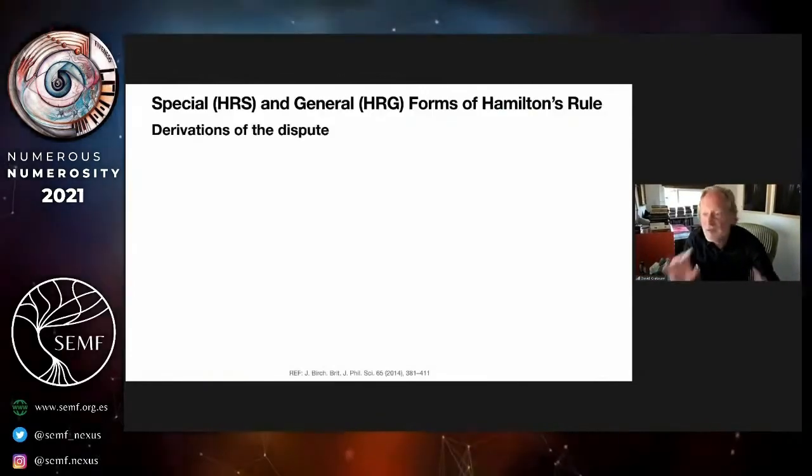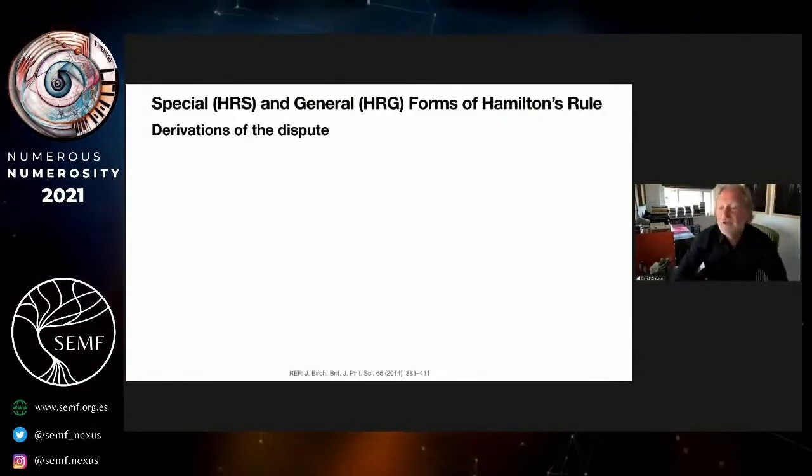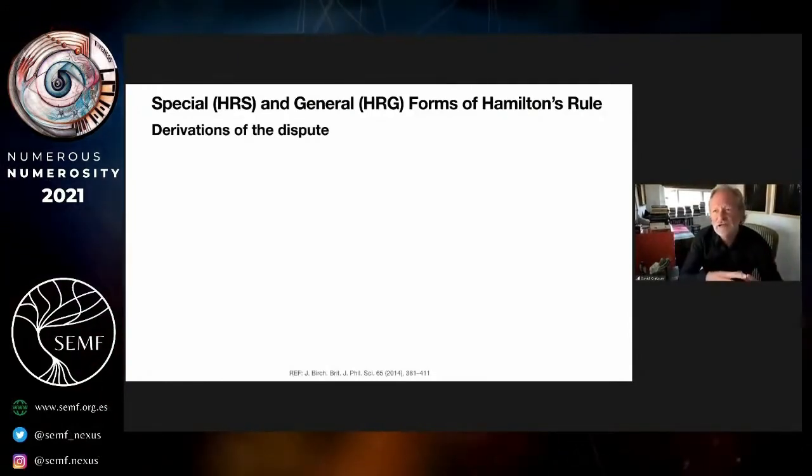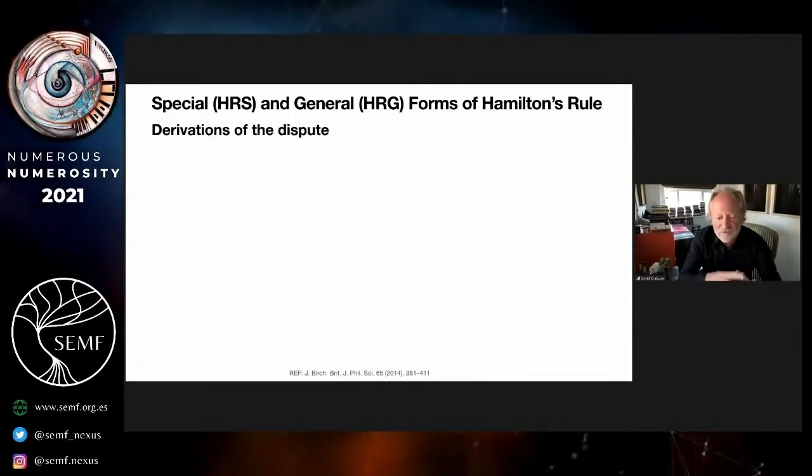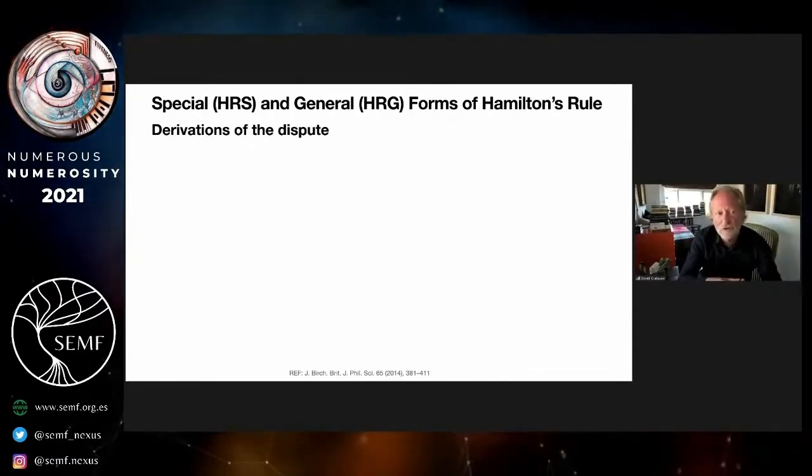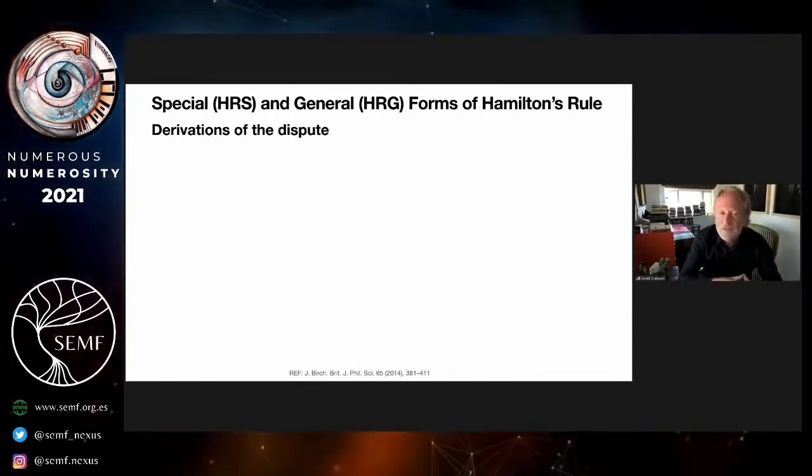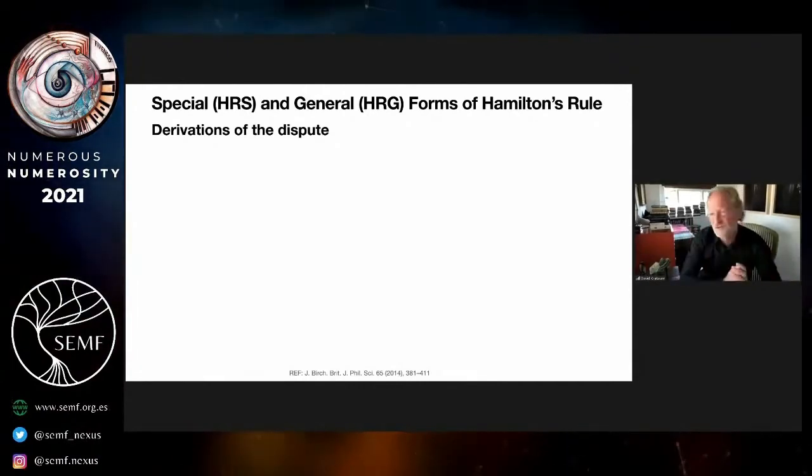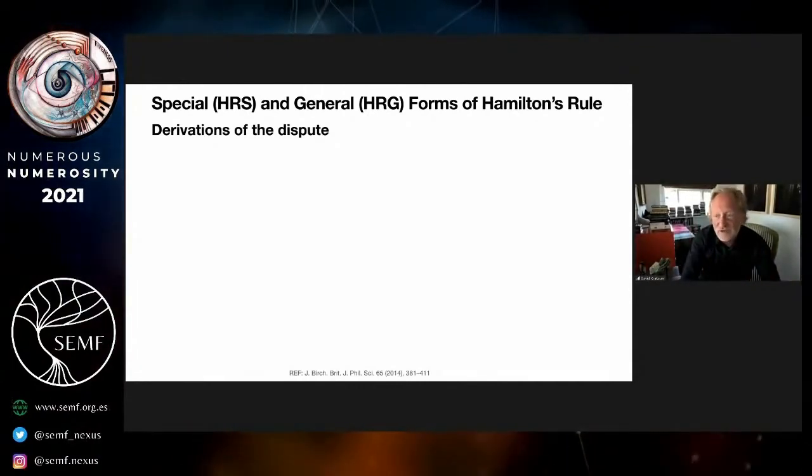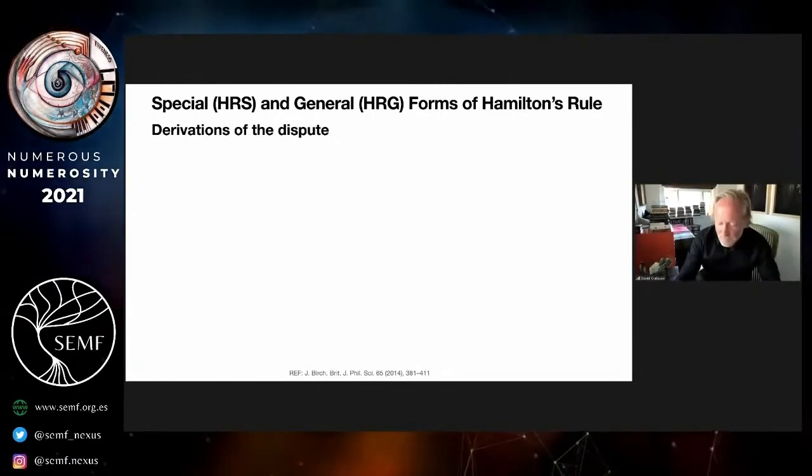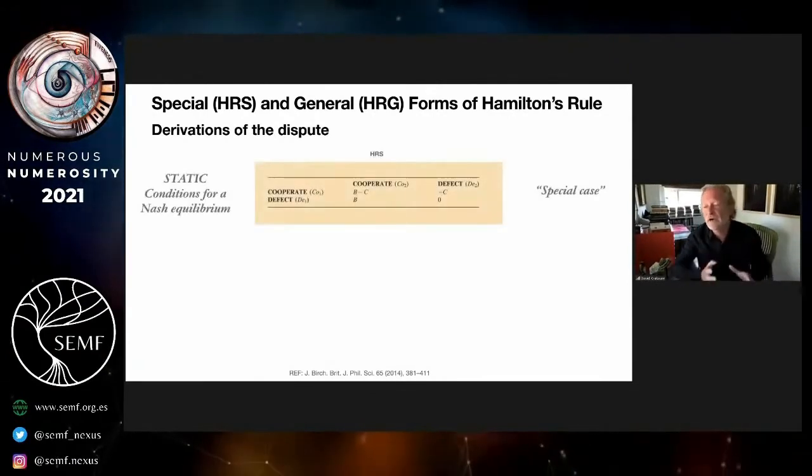So this is, I apologize, a little my most mathematical slide. But now we understand that there are really two debates that were going on here. This is a nice review from Jonathan Birch at Cambridge, and this has been understood for a while. There are really two forms of Hamilton's rule: a special one and a general one. The special one comes from comparative statics, from establishing the conditions for the stability of a fixed point, the so-called Nash equilibrium.